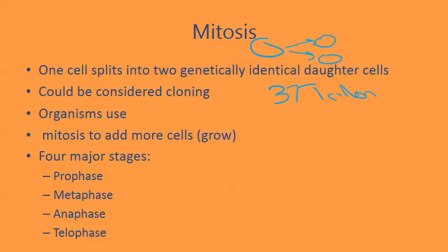There are four major stages inside of mitosis. All of these stages occur inside mitosis, and they are prophase, metaphase, anaphase, and telophase.